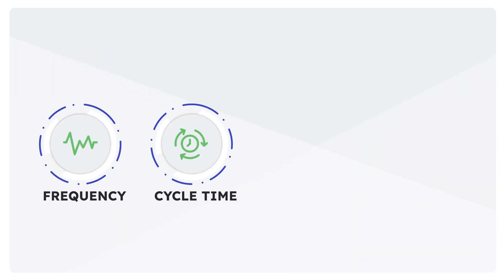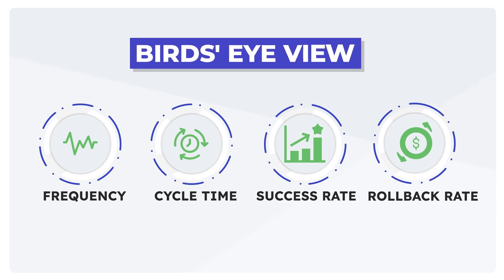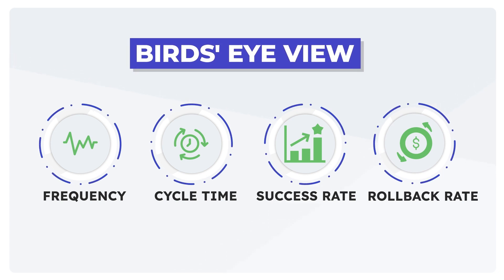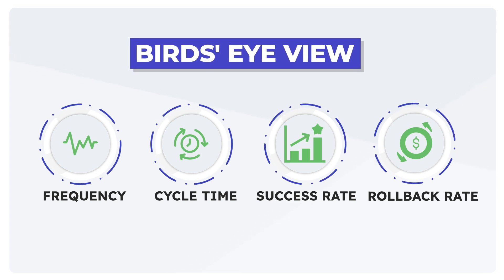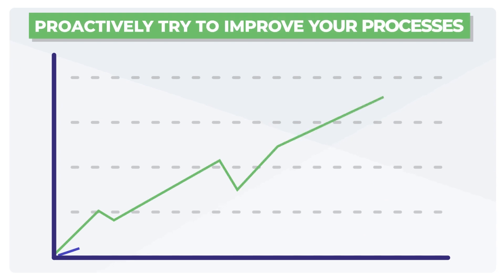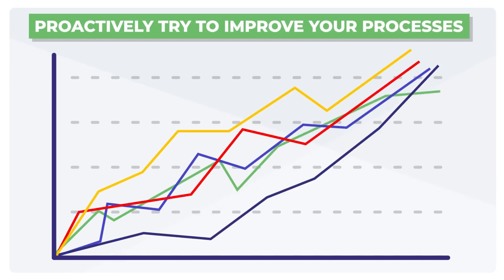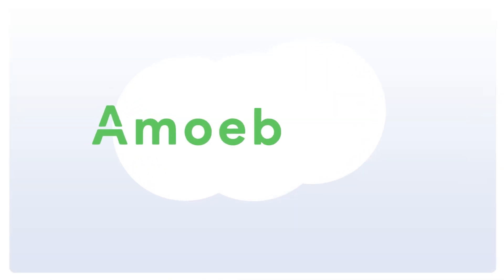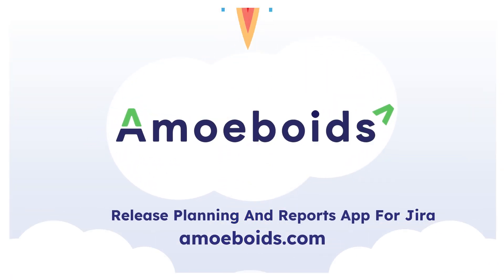You can combine the above basic KPIs with some advanced ones to get a bird's-eye view across all your release delivery parameters. What matters is that you proactively try to improve your processes, however good they already are. Visit emiboyds.com now to learn more about our release planning and reports app for JIRA.